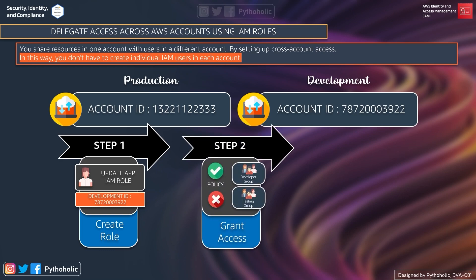Once we are done with the trust relationship and role creation, step two is to grant access to the role. Here we will update the IAM role with a deny effect for the tester group for the update app role, so that only the dev team has access. You might ask why to explicitly define a deny — if the testing group has admin or power user privileges, the implicit deny won't be enough, so we need to add an explicit deny rule.